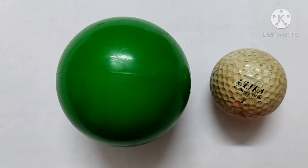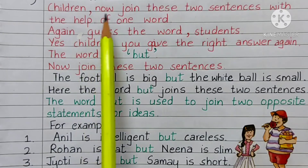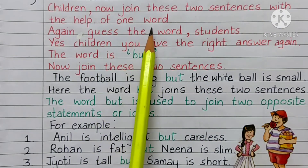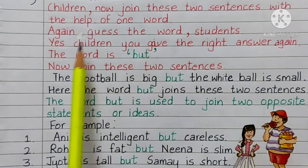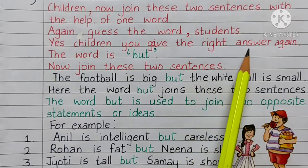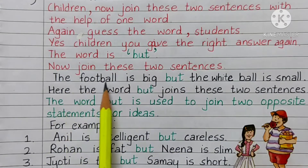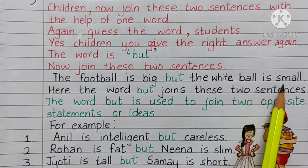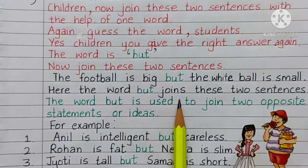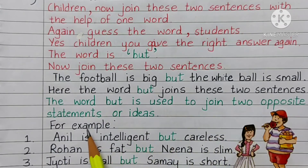Children, look at the objects. The football is big. The white ball is small. Now join these 2 sentences with the help of one word — guess the word, students. Yes, you gave the right answer again. The word is 'but.' Join these 2 sentences: 'The football is big but the white ball is small.' The word 'but' joins 2 opposite statements or ideas. For example: Anil is intelligent but careless. Rohan is fat but Nina is slim.